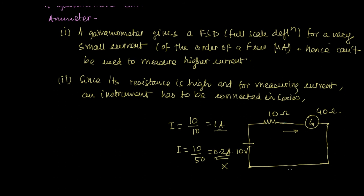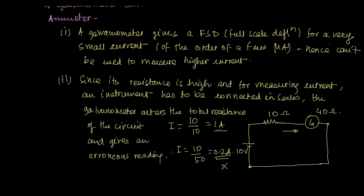So it is this reason why you do not put a galvanometer directly as a measuring device for measuring the current. When connected in series, the galvanometer alters the total resistance of the circuit and gives an erroneous reading. So this is how it goes.